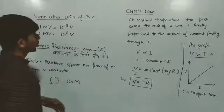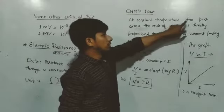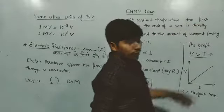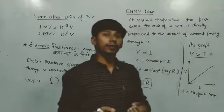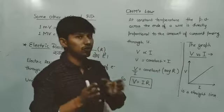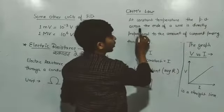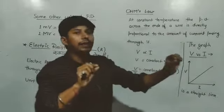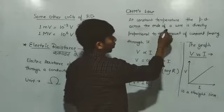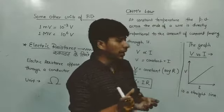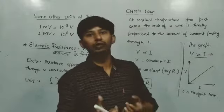So now we will study about Ohm's law. At constant temperature, the potential difference, PD means the potential difference, at constant temperature means temperature shouldn't be changed, temperature constant rahna chahiye. So at constant temperature the potential difference across the ends of a wire, suppose you have a battery connected at the ends of the wire where temperature is constant. Suppose V volt battery is used, then the current flowing through that wire has a certain amount.